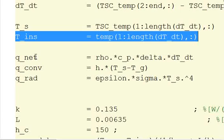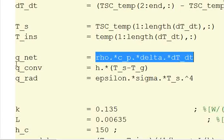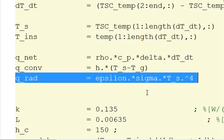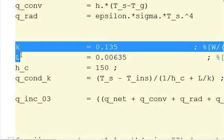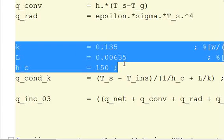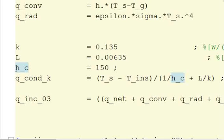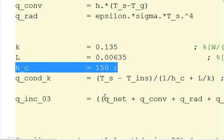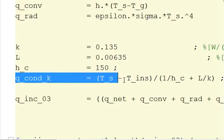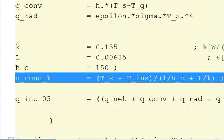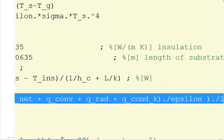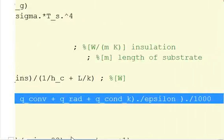And then we're going to start calculating our heat flux terms. So we have our, we know Q net is rho Cp delta DT over DT, the convective term, radiative losses. Then we're going to define these constants. They probably should have been defined above, but I have them down here. The thickness of the thermal conductivity, the thickness of the substrate, and some type of contact resistance. And then we can calculate our conductive losses here using the equation we showed in the PowerPoint presentation. And then we calculate our incident heat flux combining all three of the heat, or all four of the heat transfer terms that we calculated above.